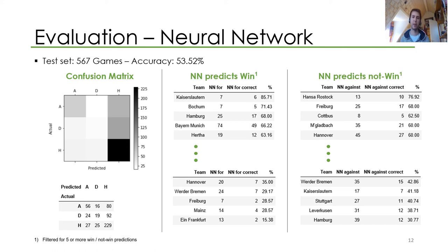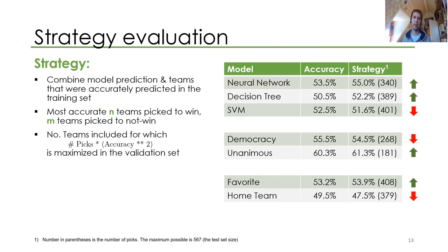The middle and right columns are filtered for at least five predictions. Based on this, you might say: why not just predict in games where one of these high-accuracy teams is involved? If you do that, you can actually improve the performance of the models — not all of them, but of the neural network and the decision tree, for example. That is, you train the model, and based on the validation set you pick the number of teams the models perform well on and implement it that way. Note that with this approach you're not going to be able to pick each and every game — just a fraction of them.